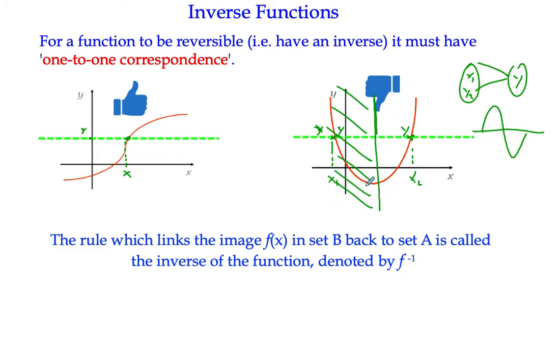So for instance, here, if we took everything to the right of the turning point, we would have one-to-one correspondence. So if a function doesn't seem to have one-to-one correspondence, we can narrow the domain so that it does for that section, and then we can think about these inverse functions.